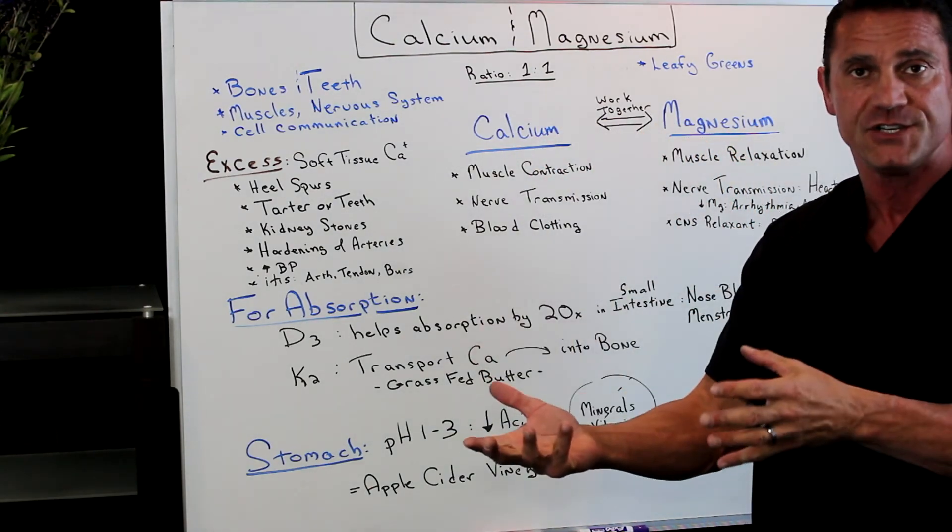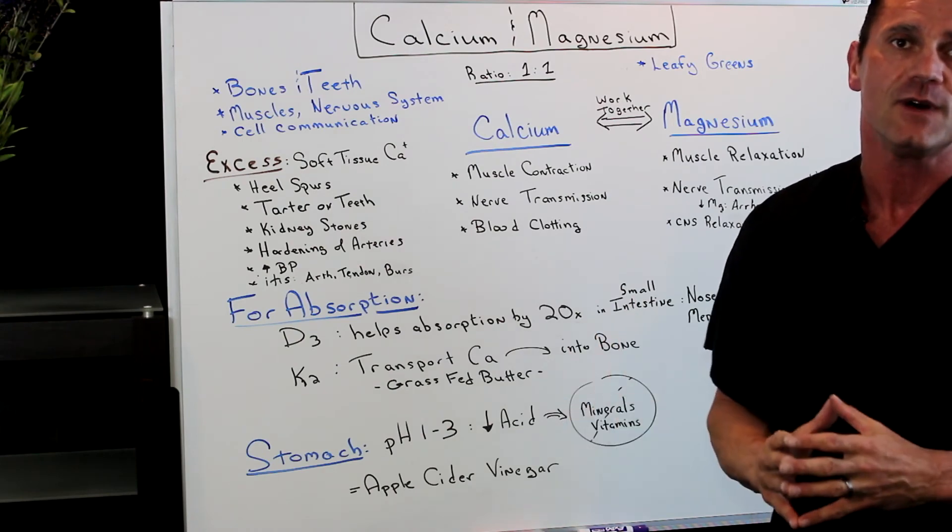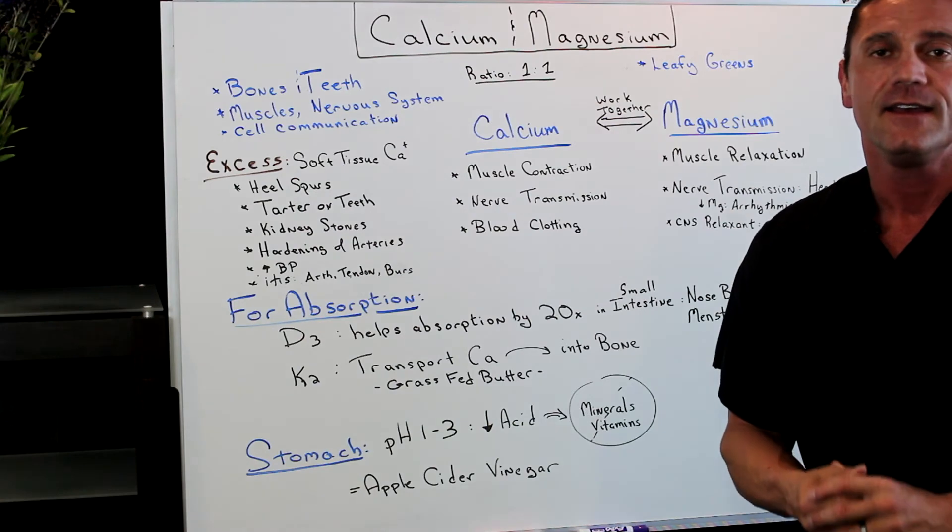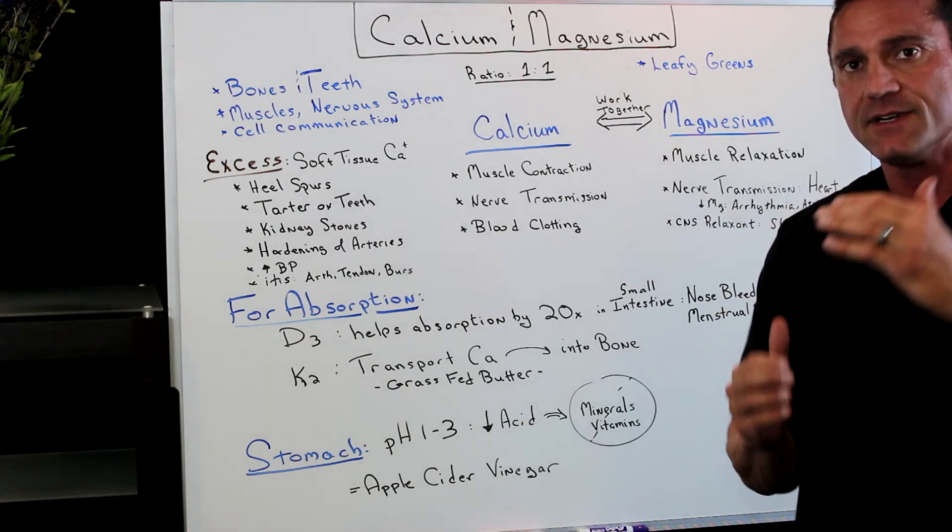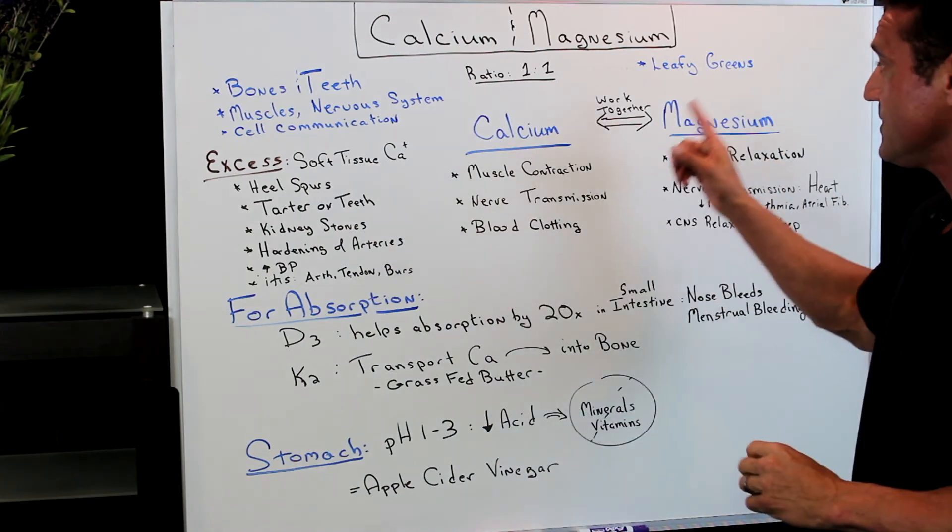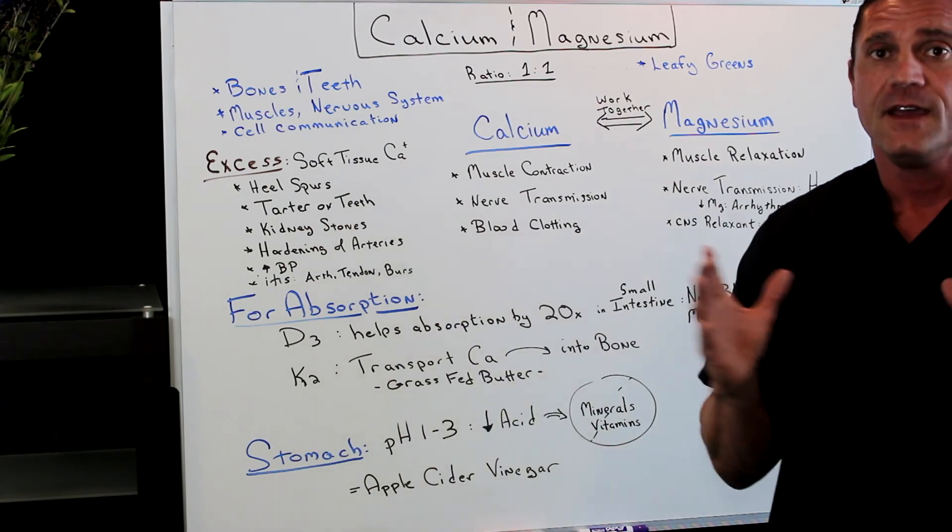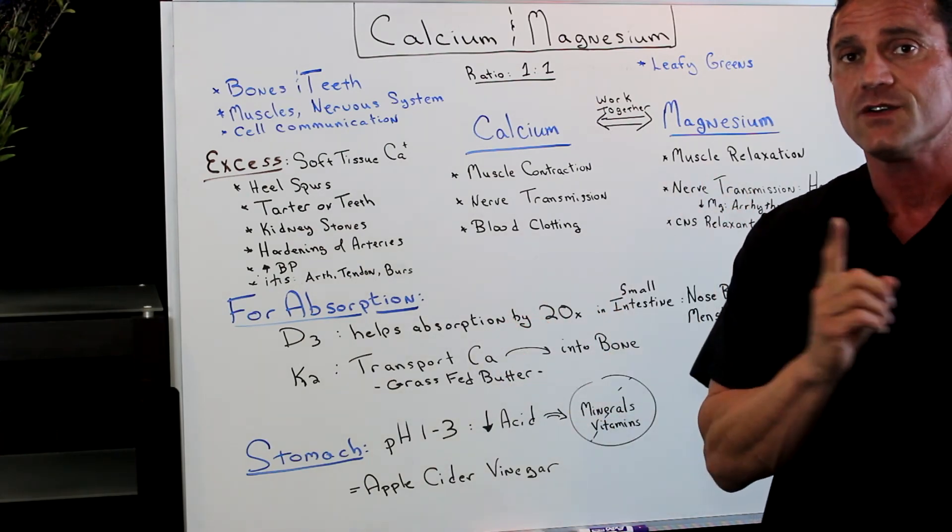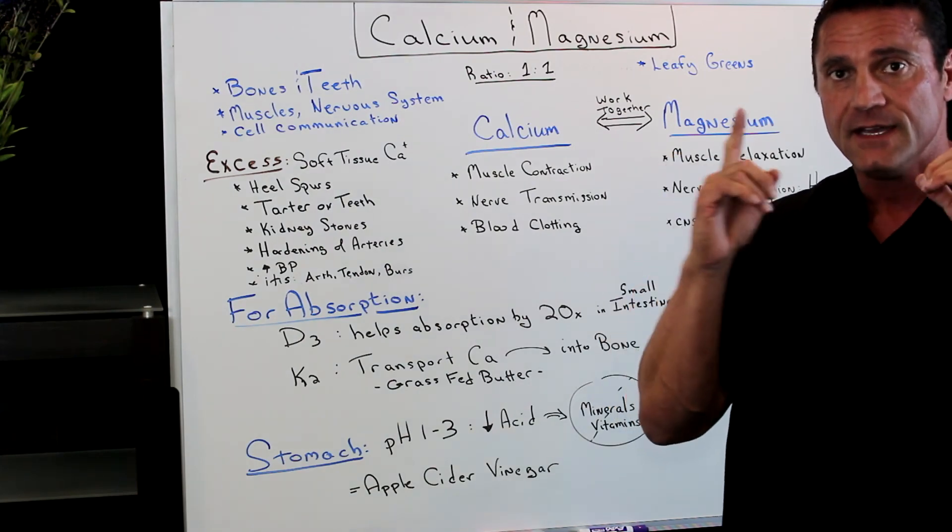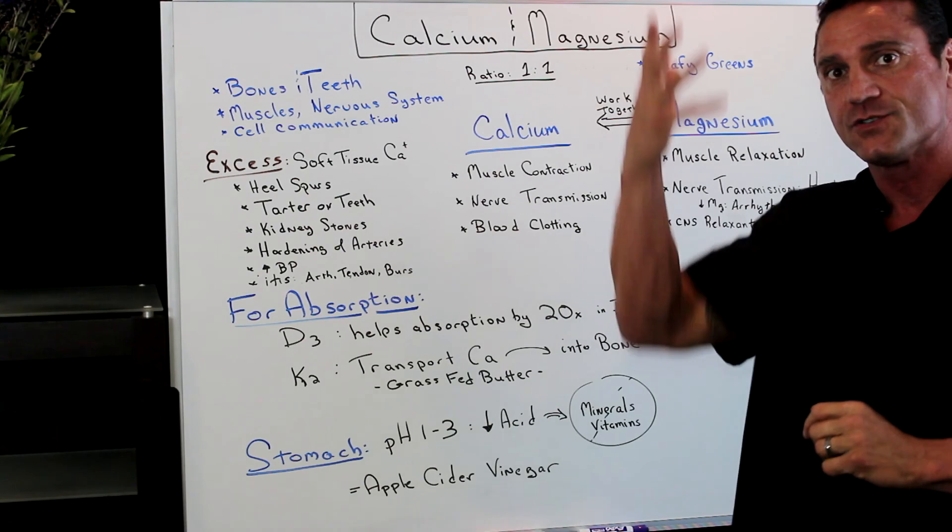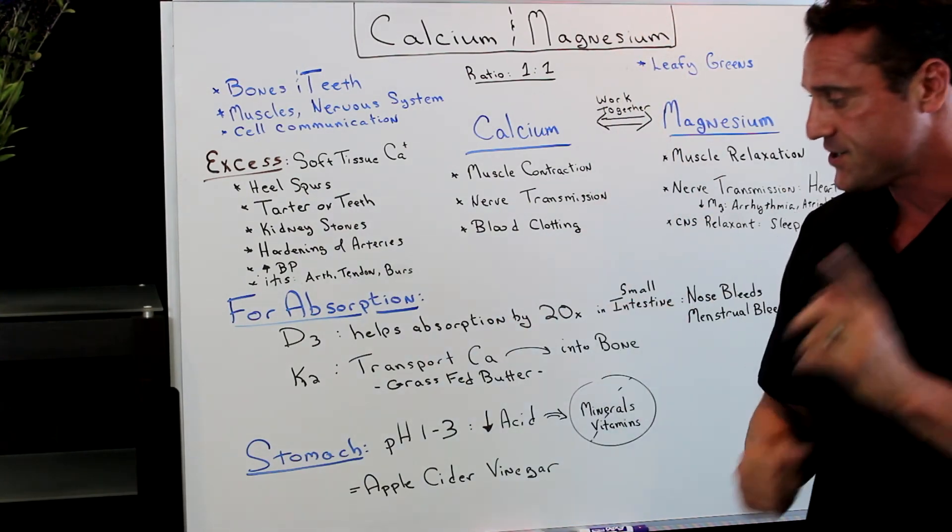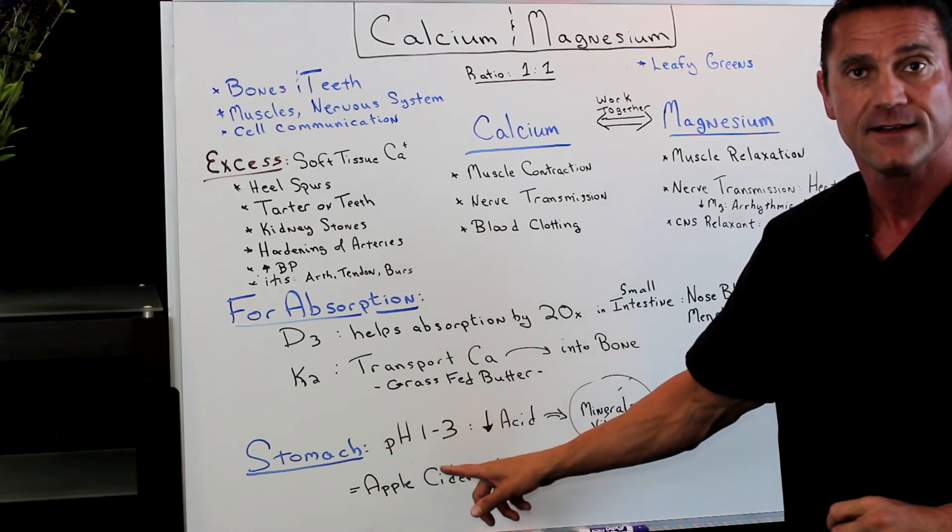And then your body is going to be a better working machine. Now, again, the common question is always, how much calcium and how much magnesium should I take? Now, oftentimes it's not that we're deficient in calcium. It's oftentimes we're deficient in magnesium because magnesium is found in leafy green vegetables. And I always recommend do a one-to-one ratio. If you do a one-to-one ratio, the balance is going to be equal. Make sure you've taken vitamin D3, K2 for absorption of the calcium and magnesium for utilization. And make sure your stomach pH is between one and three.